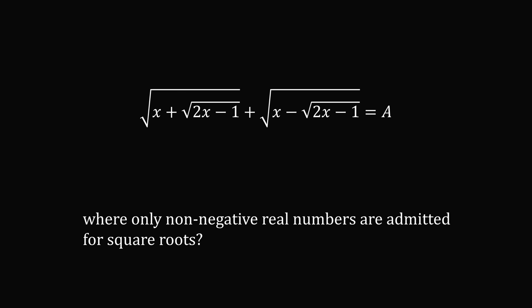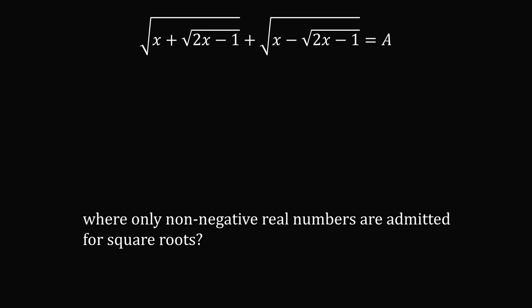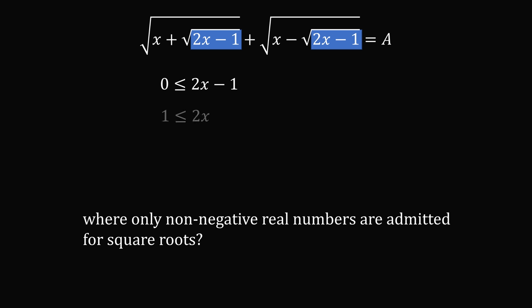Let's focus on the domain. Only non-negative real numbers are admitted for square roots, so we need everything under square roots to be non-negative numbers. Here we have the square root of 2x minus 1. We need that to be a non-negative number, so 0 is less than or equal to 2x minus 1, meaning 1 is less than or equal to 2x, so x is greater than or equal to 1 half.